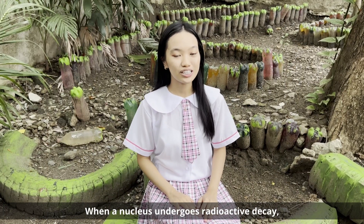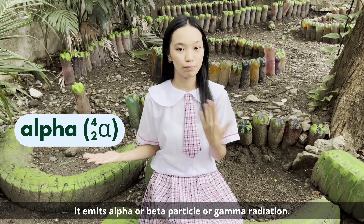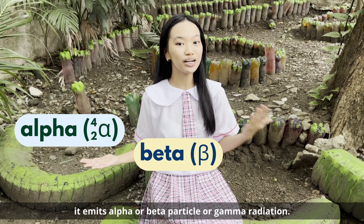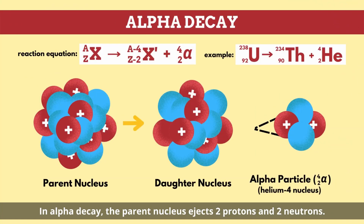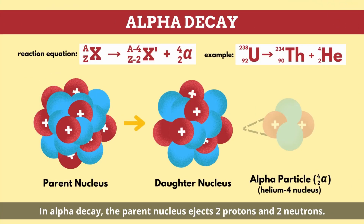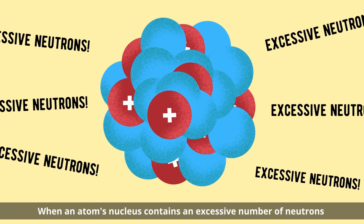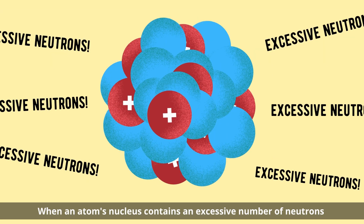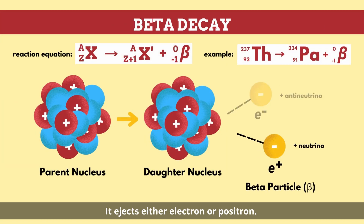When a nucleus undergoes radioactive decay, it emits alpha or beta particles or gamma radiation. In alpha decay, the parent nucleus ejects two protons and two neutrons. When an atom's nucleus contains an excessive number of neutrons compared to protons, beta decay occurs — it ejects either an electron or positron.